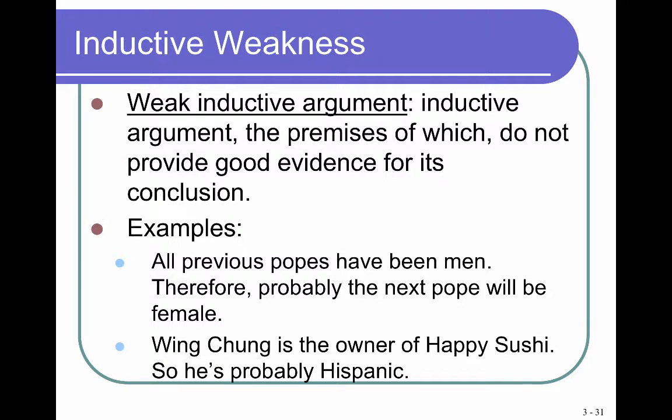What is a weak inductive argument? It's one in which the premises do not provide good evidence for the conclusion. Here's one: all previous popes have been men, therefore probably the next pope will be female. This is not to say the next pope won't be a woman, but the premise that all previous popes have been men doesn't give good evidence for the conclusion that the next one will be female. In another example: Wing Chung is the owner of Happy Sushi, so he's probably Hispanic. It's pretty obvious that Wing Chung is probably not Hispanic, and the evidence of his name and business doesn't really lead to that conclusion. So these are both weak inductive arguments.